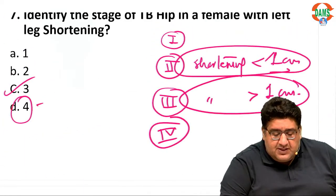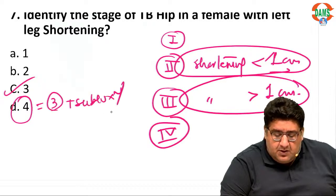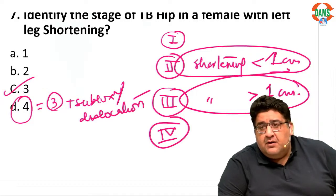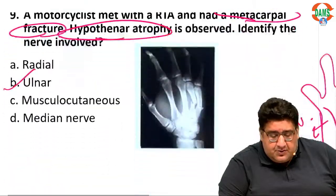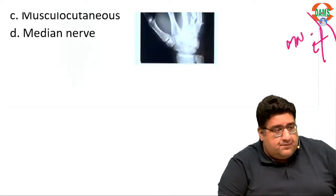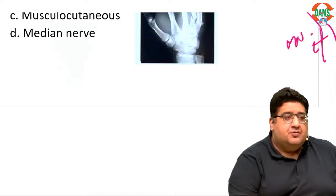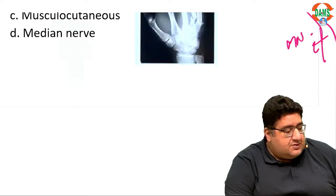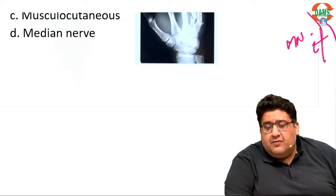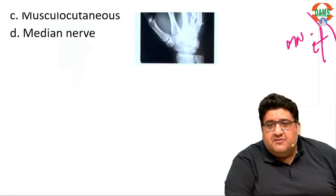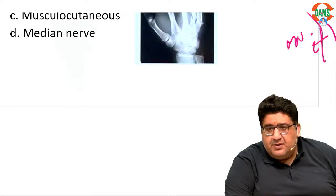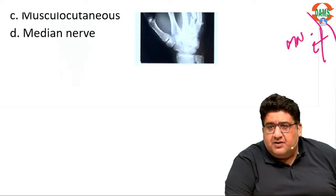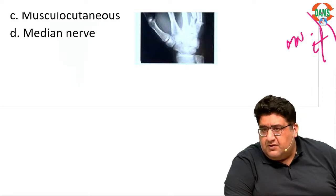Stage 4 is equal to stage 3 plus subluxation or dislocation of the joint, where the joint is essentially finished. This was question number 9 — a rare occasion where orthopedics contributed 9 questions; normally it contributes 4, 5, or sometimes 6 MCQs. Whenever you are preparing for an FMG exam, you should sort out the simple things first. Whatever questions were asked, they were all basics — no rocket science. We have a habit of going through the rarest possible MCQs and end up gaining nothing. Always think of the basics first and get the easy things right.